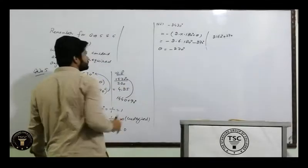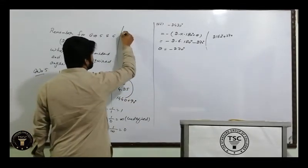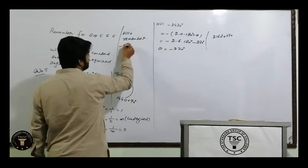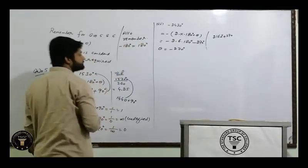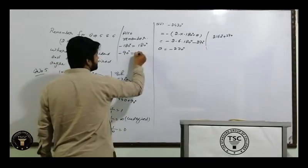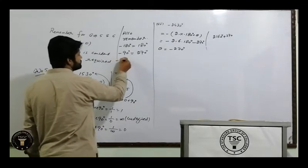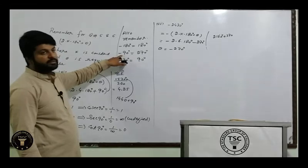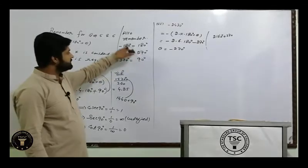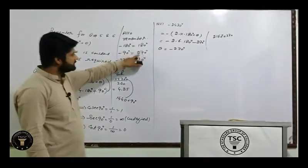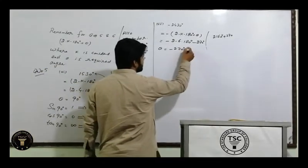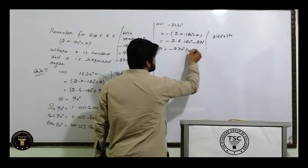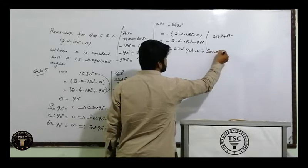Also remember: agar aapke paas minus 180° aaye, uski jagah plus 180° likh dein. Agar minus 90° aaye, uski jagah 270° likh dein. Aur agar minus 270° aaye, uski jagah 90° likh dein — kyunke in dono ki value same hoti hai. Toh yahan minus 270° aaya, which is same as plus 90°.